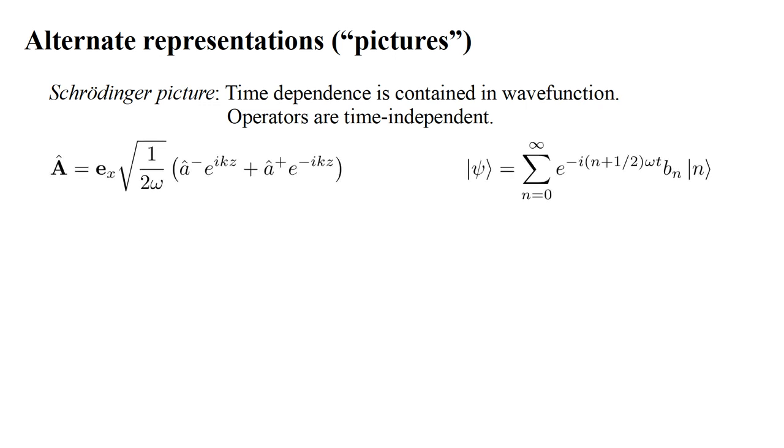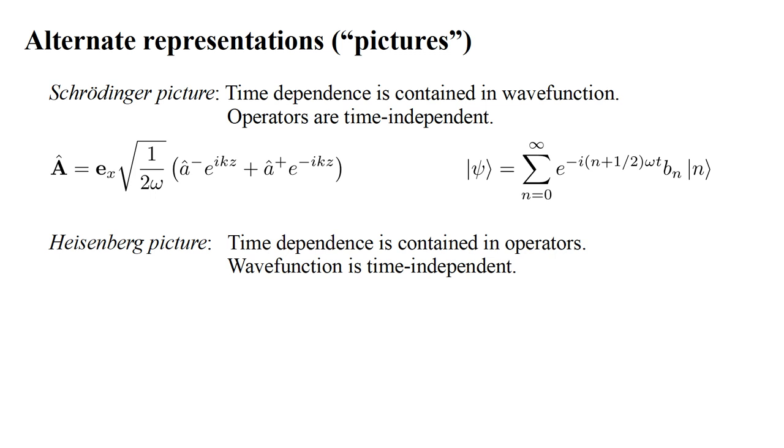In this video so far, we've been working in this representation. Our field operator has spatial dependence, but no time dependence. The time dependence appears in the wave function. A different representation is the Heisenberg picture. Here, time dependence is contained in operators, while the wave function is time independent.